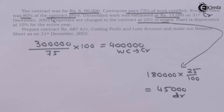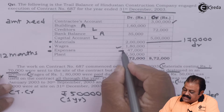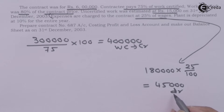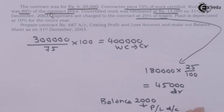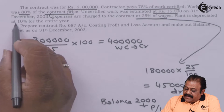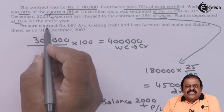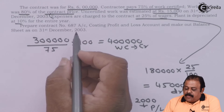The trial balance shows total expenses of 47,000. Of this, 45,000 is charged to the contract account (25 percent of wages), and the balance of 2,000 will go directly to the profit and loss account. Plant is to be depreciated at 10 percent, and depreciation will be proportionately charged to the contract with the balance charged to the profit and loss account.